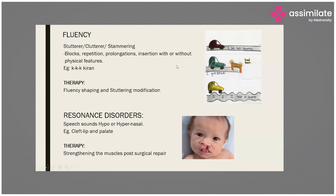Stuttering can happen in the pediatric population and in the adult population. For adults, it's much easier to make them understand how it works. But in the pediatric population, we have to use pictures and toys to make sure they understand how exactly stuttering happens — what is actually happening in their system when they are talking — because they need to understand so that they can overcome it.